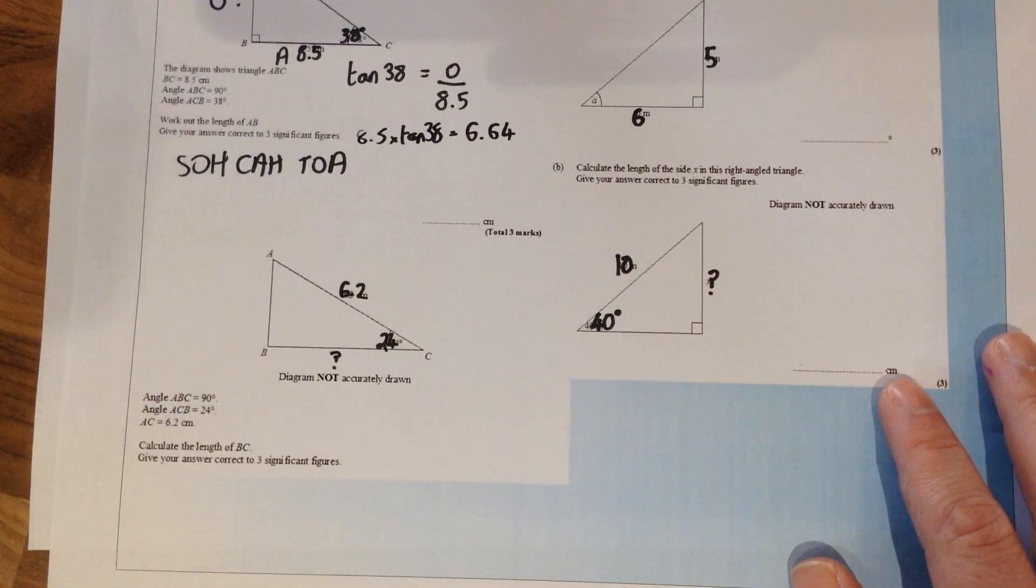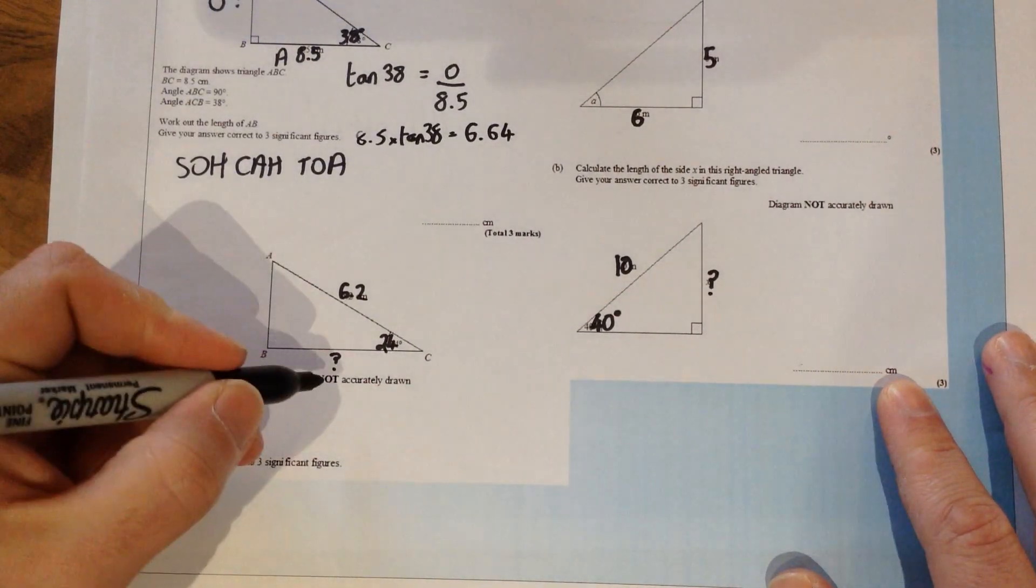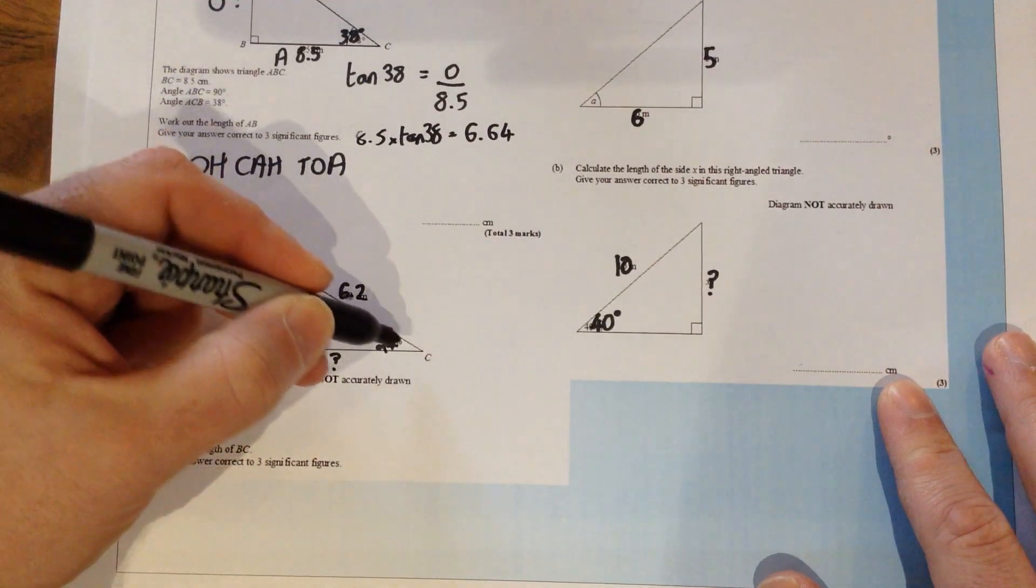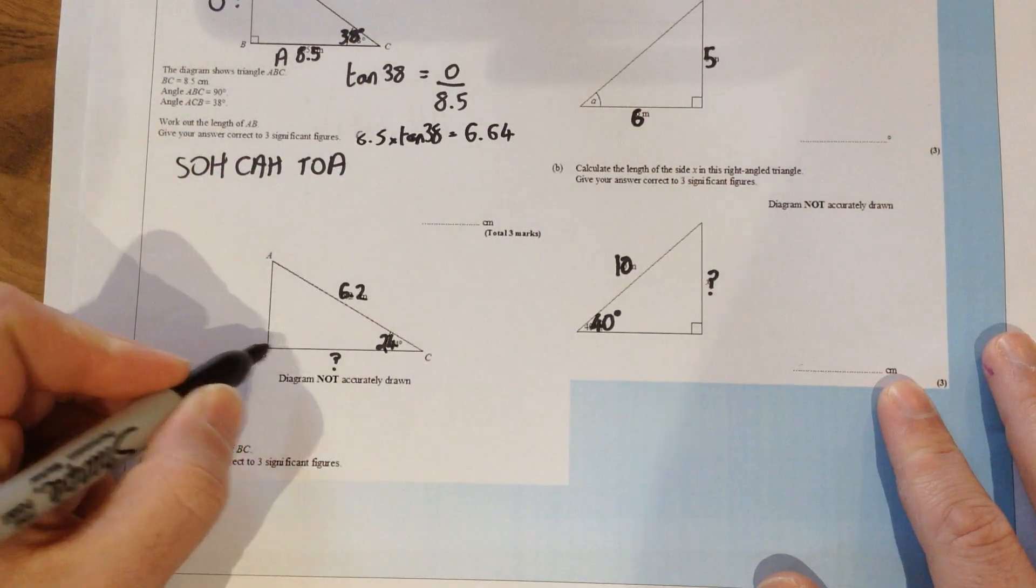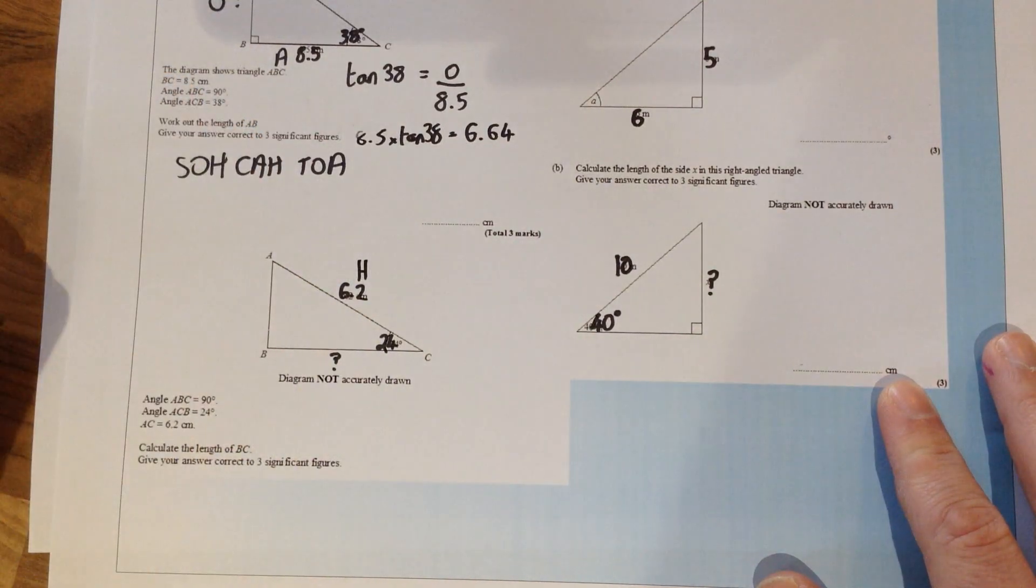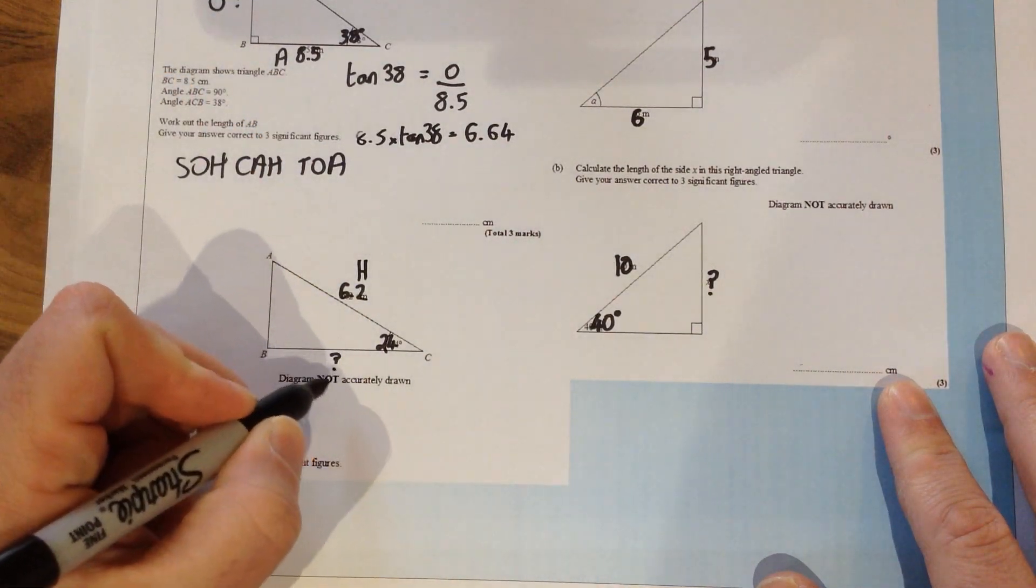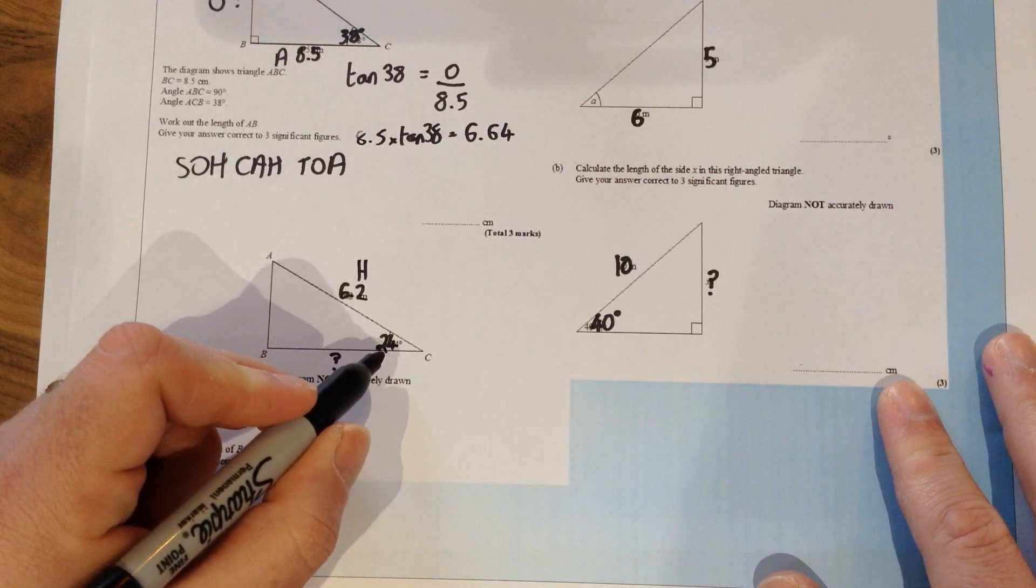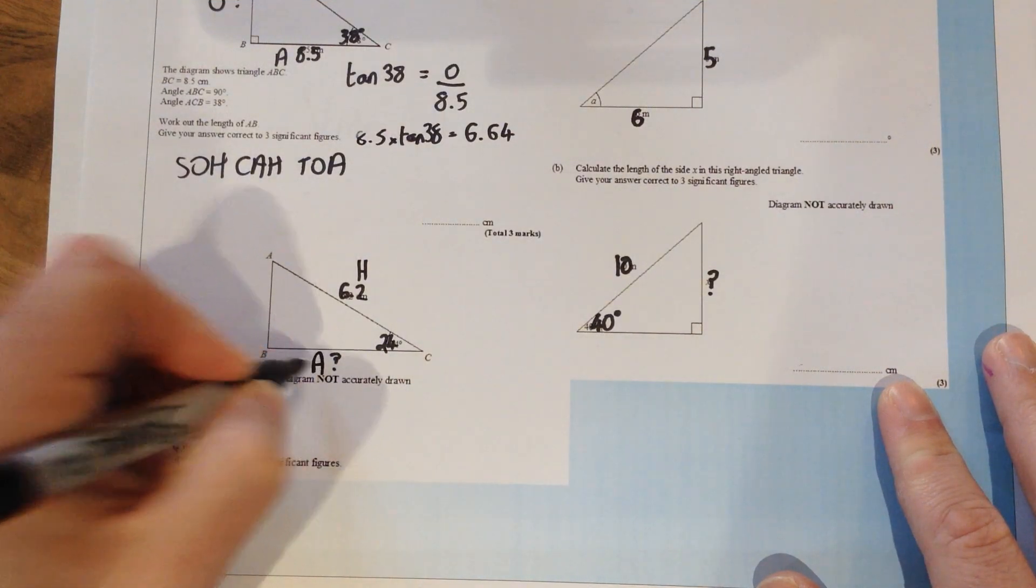The next question a little bit lower down very similar. So if we label up the side that we've got, so the 6.2 is the diagonal side. It's the one that is not touching the right angle so that's the hypotenuse. And then this question mark, the one that we're looking for, is just next to the angle that we've been given so that's the adjacent.